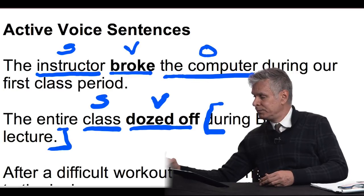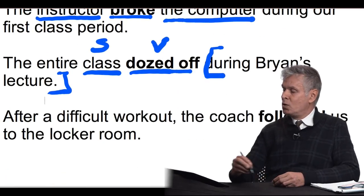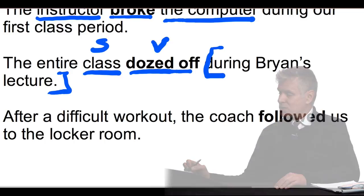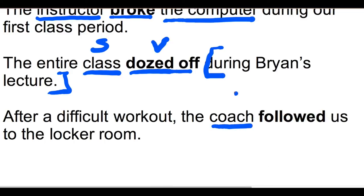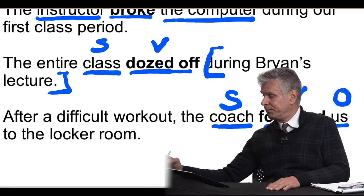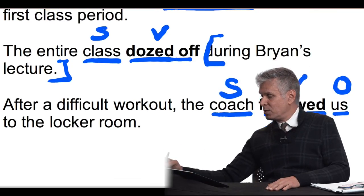Let's look at this third example. I made it a little bit more difficult because I have a prepositional phrase at the start. The subject is the coach — I'm putting an S over coach. 'Followed' is the verb — I'll put a V over followed. And then who did the coach follow? He followed us, so we're the object. Us is the object. So again, the coach followed us. It makes sense. Passive voice is very different — it doesn't follow this pattern. The most important thing is word order.